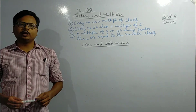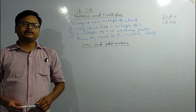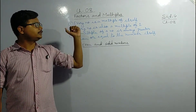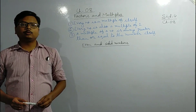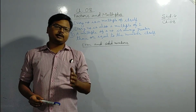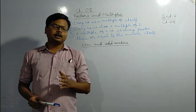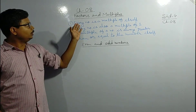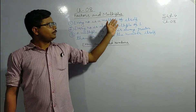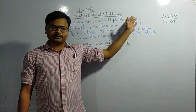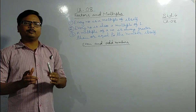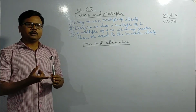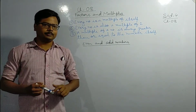Good morning students. Today we are going to start Chapter 8: Factors and Multiples. Before starting this chapter, let us see a few rules. Rule number one: every number is a multiple of itself, which means if you multiply any number with one, you will get the same number.